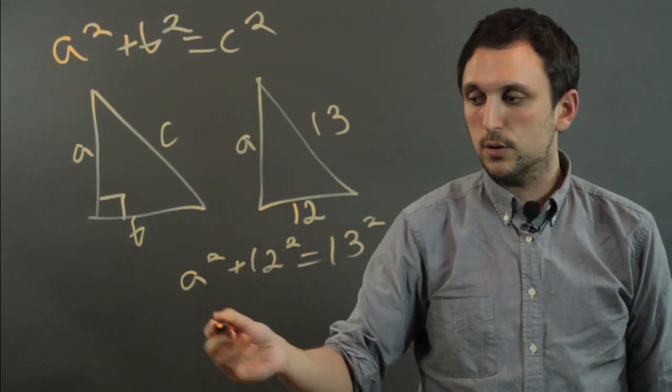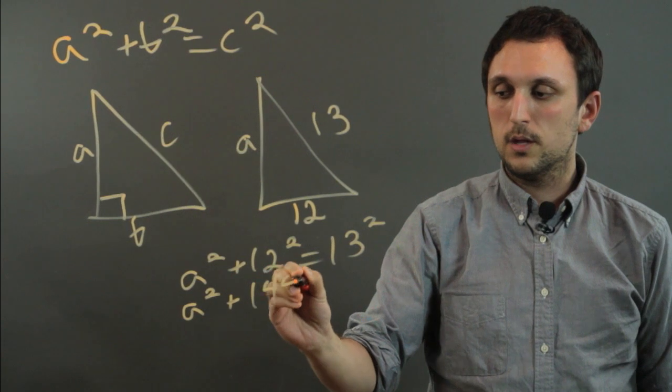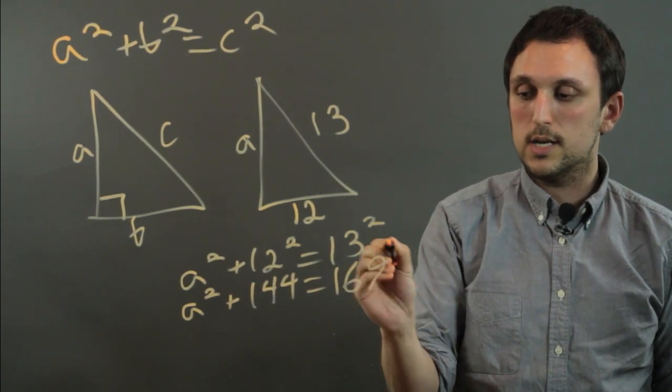So A squared stays what it is. 12 squared is 144, and 13 squared is 169.